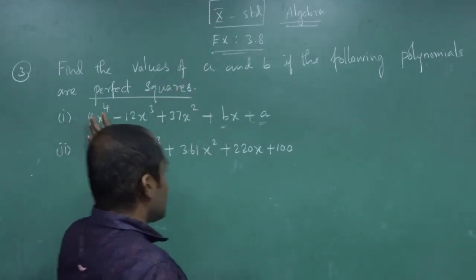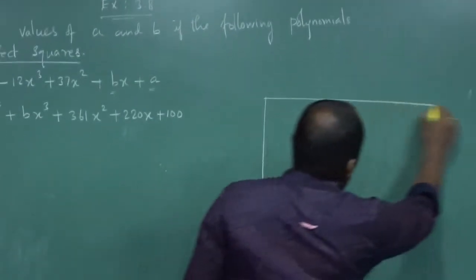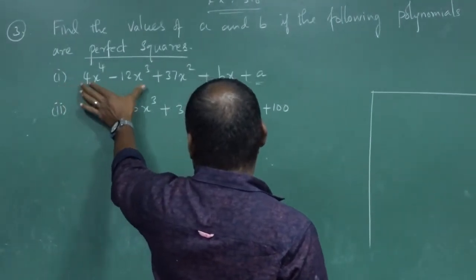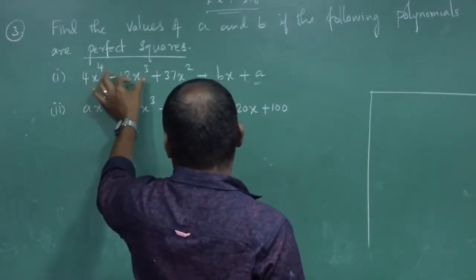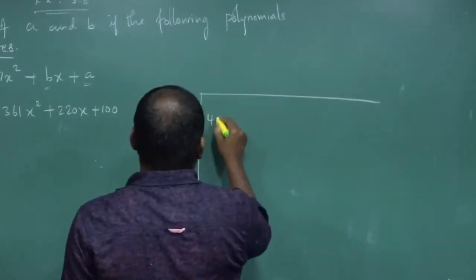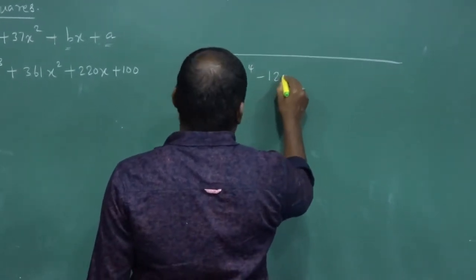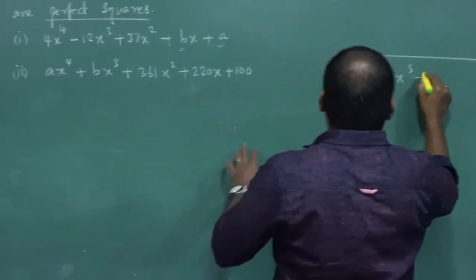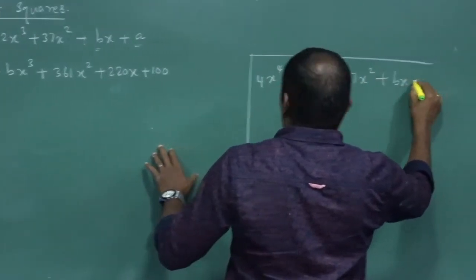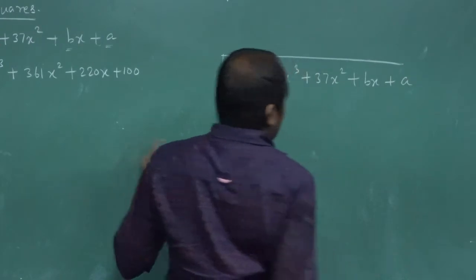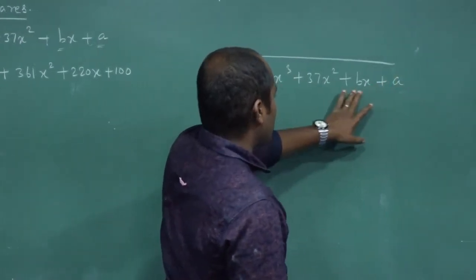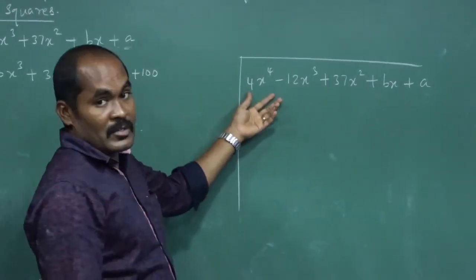Listen, this is also first sum model — you know it very well. The given polynomial has powers x⁴, x³, x², x, and a constant. So write it as: 4x⁴ minus 12x³ plus 37x² plus Bx plus A. We want to find B and A — the constant term and the coefficient of x.